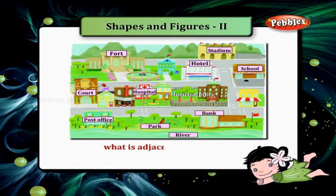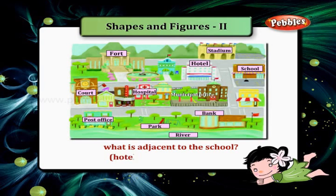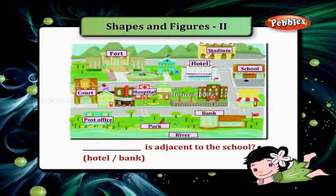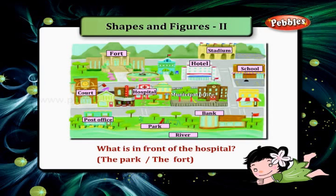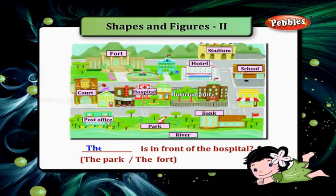What is adjacent to the school — the hotel or the bank? The hotel is adjacent to the school. What is in front of the hospital — the park or the fort? The park is in front of the hospital.